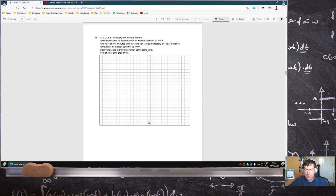At 9am, a delivery van leaves a factory. It travels towards a destination at an average speed of 60. One hour and 45 minutes later, a second van leaves the factory on the same route. It travels at an average speed of 95.